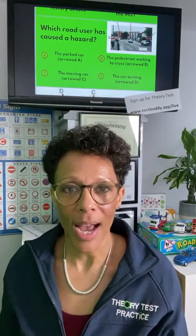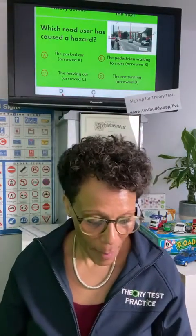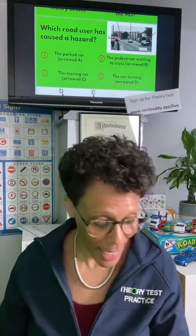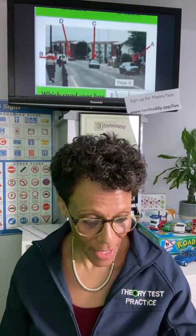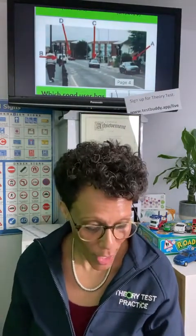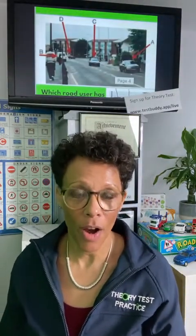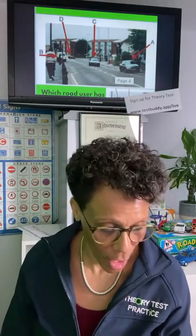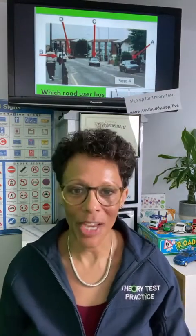This question asks: which road user has caused a hazard? Is it A: the car parked; B: the pedestrian waiting to cross; C: the moving car; or D: the car turning? There's a picture for you to look at — is it the parked car, the pedestrian, the overtaking car, or the turning car? I'll give you a few seconds.